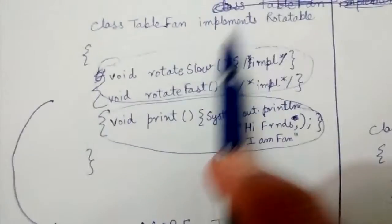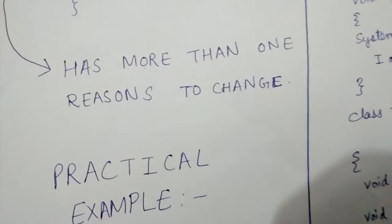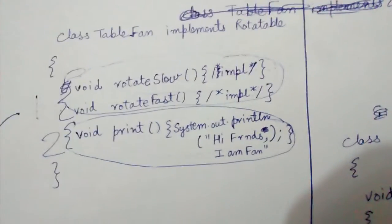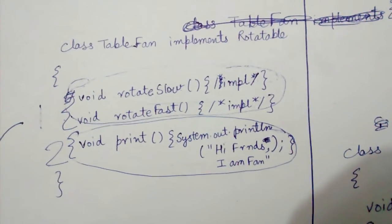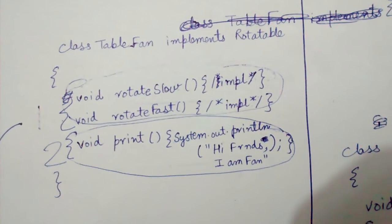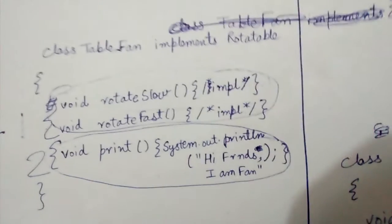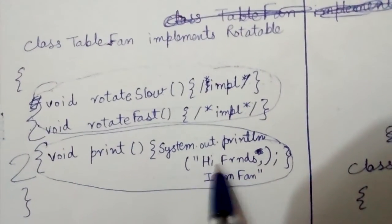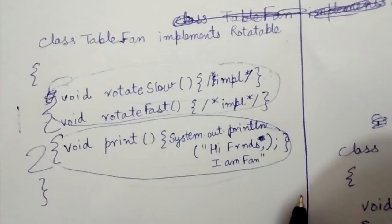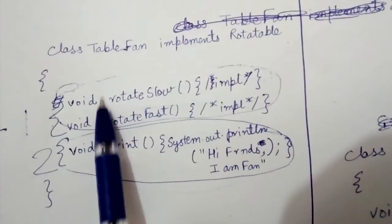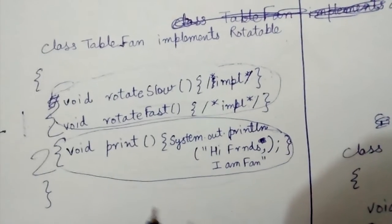So this class has more than one reason to change — this is the first reason and this is the second reason. Why is it bad design? Because it has more than one reason to change, so this class will change more frequently. If we change the print mechanism then this class is changing and all the dependent classes are being affected. And if something happens with the rotation mechanism then also this class is changing and it will affect all the dependent classes.